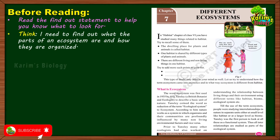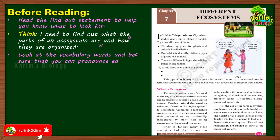After reading the find-out statement, your goal becomes clear — for example, 'I need to find out what the parts of an ecosystem are and how they are organized.' However, you cannot immediately start reading the textbook because you have to look at the vocabulary words and be sure you can pronounce each word. Science textbooks contain a lot of scientific terminology that can sometimes be difficult to pronounce.